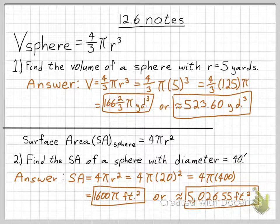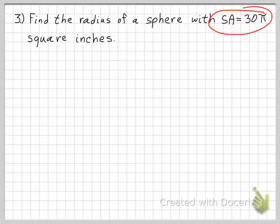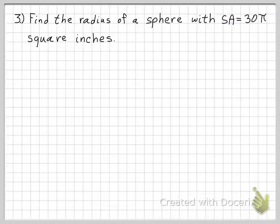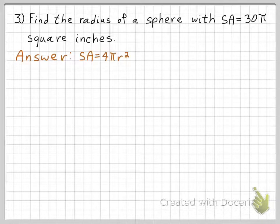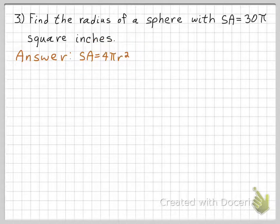And then there's one more type of problem you can expect to get. And that is find the radius of a sphere. The radius of a sphere now is going to be the unknown. Given the surface area is 30 pi square inches. So in this case, we know the surface area and we have to find the radius. So again, we'll start off with the formula for the surface area of a sphere. It equals 4 pi r squared.